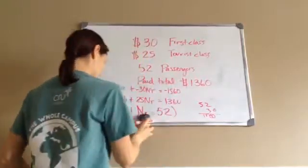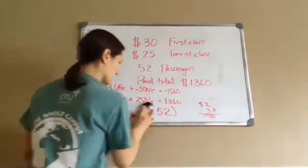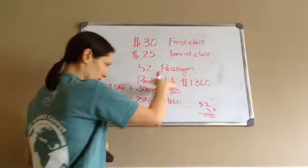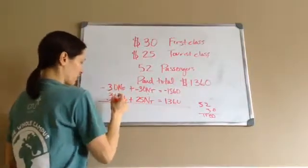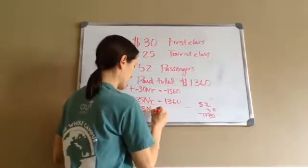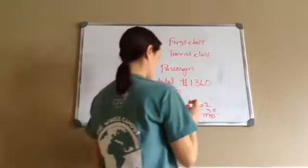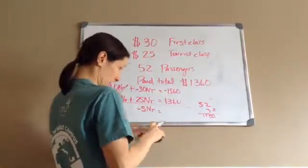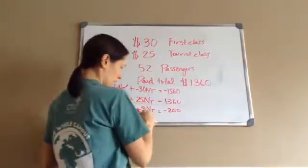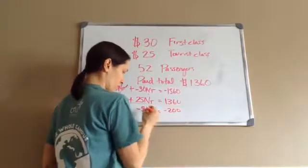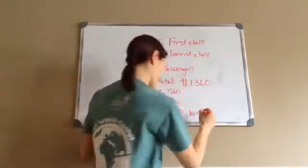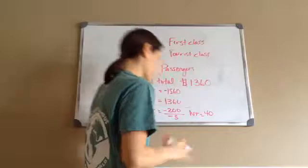The way the elimination method works is then you add each section. Negative 30 plus positive 30 gets rid of them. Negative 30 plus 25 gives me a negative 5NT. Negative 1560 plus 1360 gives me a negative 200. Then this says negative 5 times what equals negative 200, so I'm going to divide by negative 5. So NT equals 40, I believe. 40, yes.